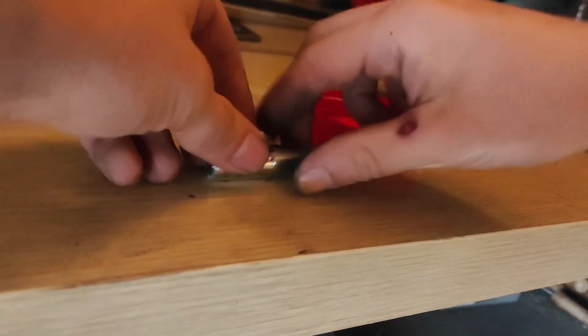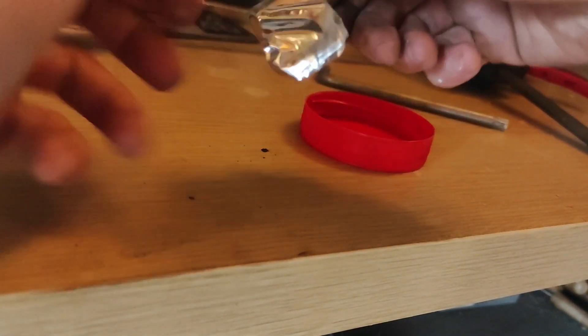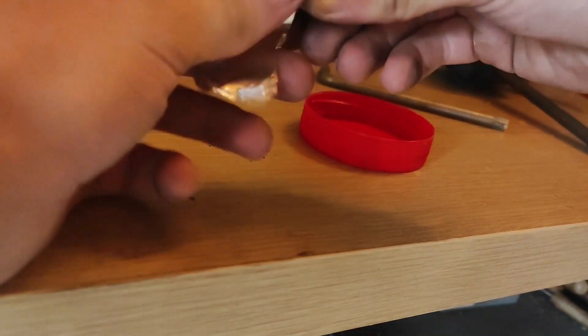We first start by taking a used battery and cutting it at the ends. Then we peel off the plastic.